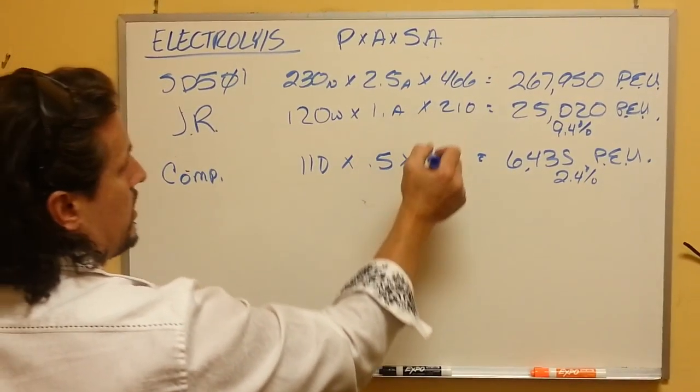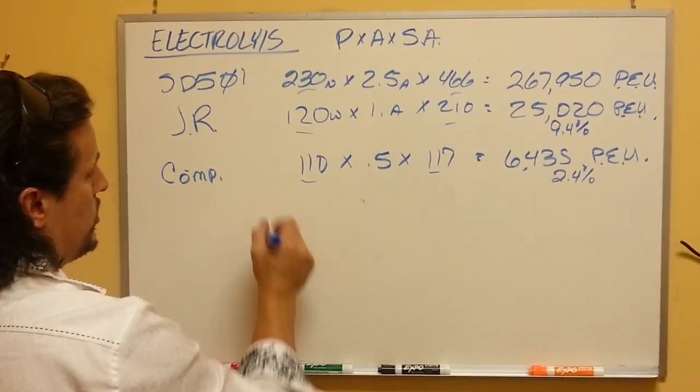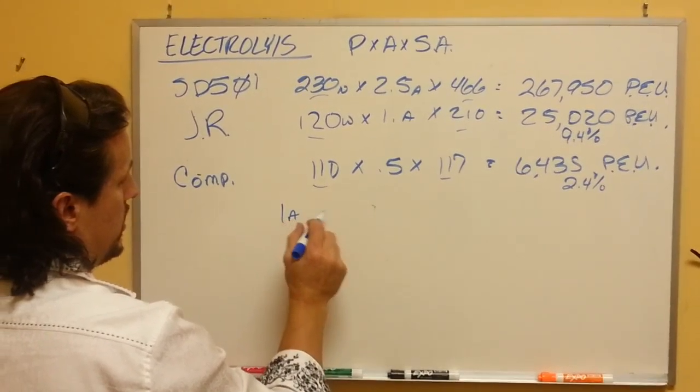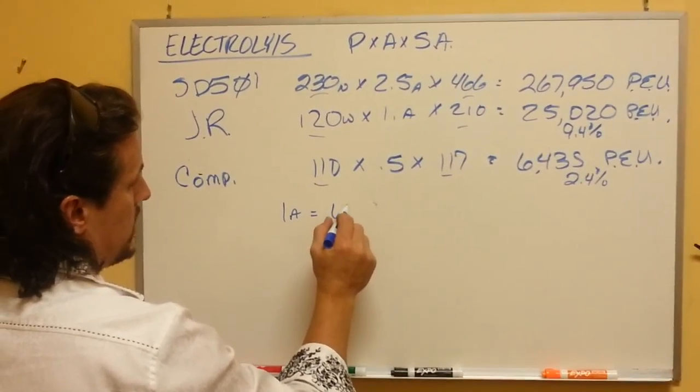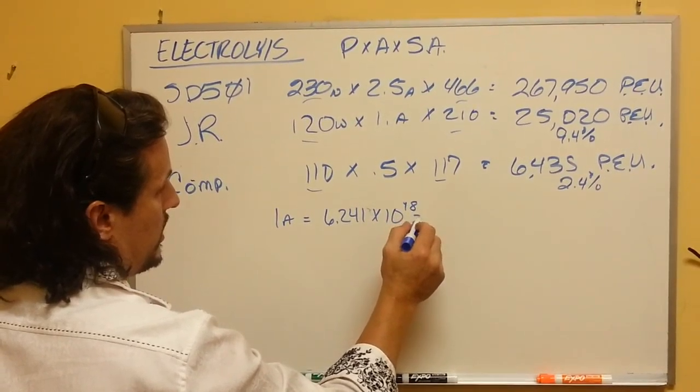The big secret to these is not just the power, but the amperage. 1 amp equals 6.241 times 10 to the 18 electrons.